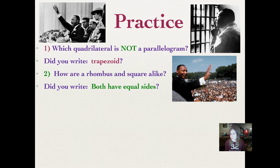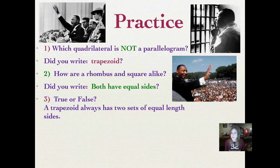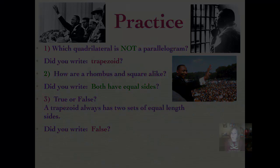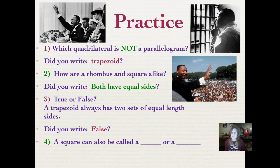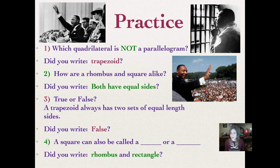Number three: true or false, a trapezoid always has two sets of equal length sides. Pause it and push play when you've written it down. Did you write false? That's kind of what we talked about in number one. Number four: a square can also be called a blank or a blank. Go ahead and fill that in. Did you write rhombus and rectangle, or rectangle and rhombus? Either way, you need to have both of those terms listed.